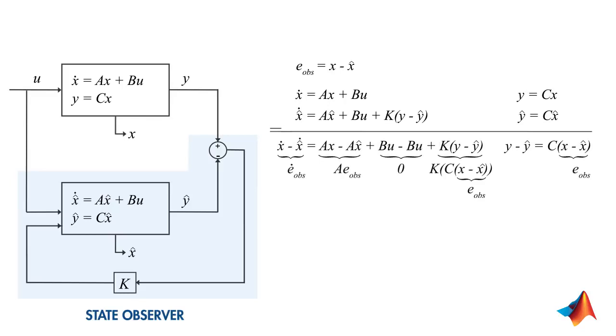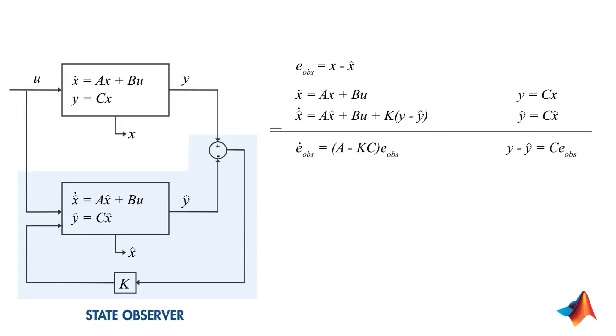By rearranging terms, we see that the error dynamics can be shown by this equation. The solution to this equation is an exponential function. What this means is, if this term is less than 0, we're good because we know that our error will vanish over time and x hat will converge to x.